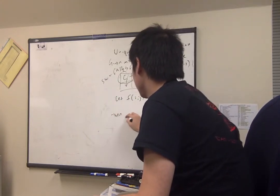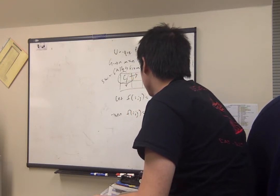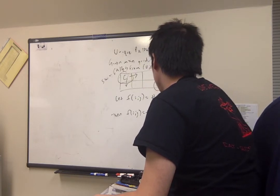Then we can say that f of i,j equals f of i minus 1, j plus f of i, j minus 1.